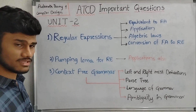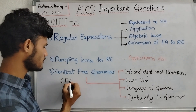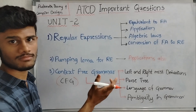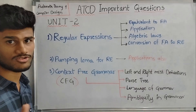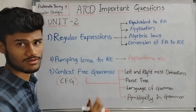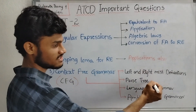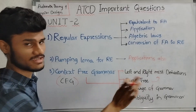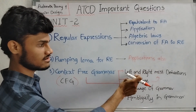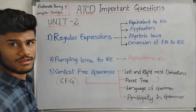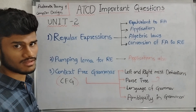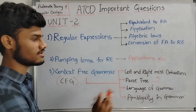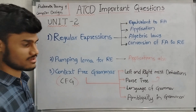Next we have Context-Free Grammar, also known as CFG. This is an important topic. Key subtopics include leftmost derivation and rightmost derivation. Language of grammar can be covered for 2-mark, 5-mark, or 10-mark questions. The last topic is Ambiguity of Grammar.